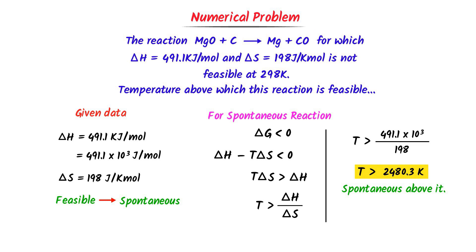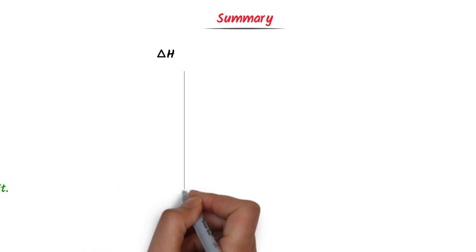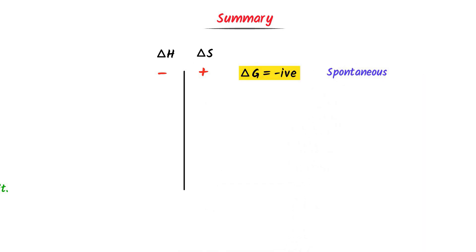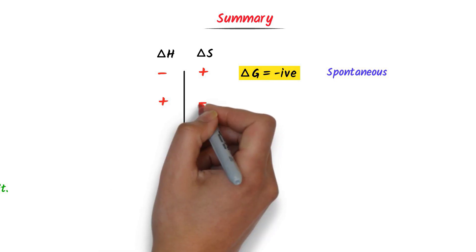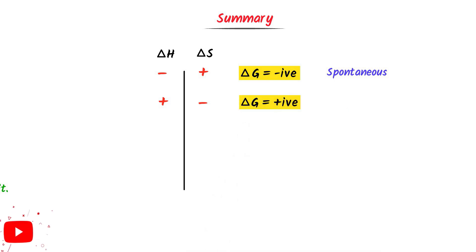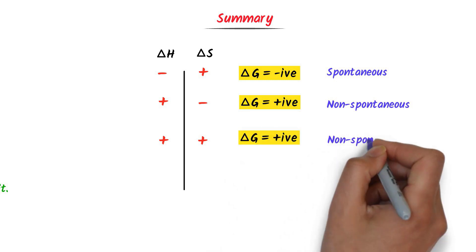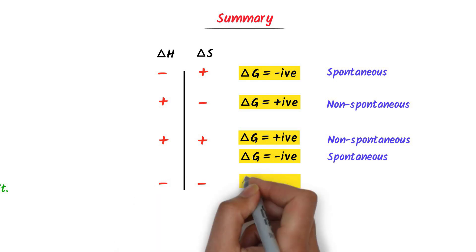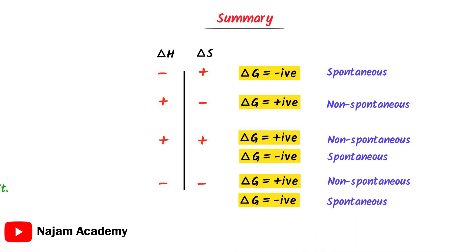To conclude this whole lecture: if ΔH is negative and ΔS is positive, then ΔG is negative and it is a spontaneous reaction at all temperatures. If ΔH is positive and ΔS is negative, then ΔG is positive and it is non-spontaneous at all temperatures. If both ΔH and ΔS are positive, ΔG is either positive or negative — the reaction is non-spontaneous below a particular temperature and spontaneous above it. Similarly, if both ΔH and ΔS are negative, the reaction may be spontaneous or non-spontaneous depending on temperature.